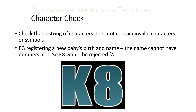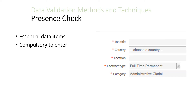A character check is when we check that a string of characters does not contain invalid characters or symbols. For example, if we're registering a new baby's birth and name, you can't have numbers in the name, so 'K8te' would be rejected. And then a presence check is for compulsory fields — usually indicated with a star on a data entry form. These are essential data items that have to be entered; if they're left blank then the computer will not allow you to carry on.